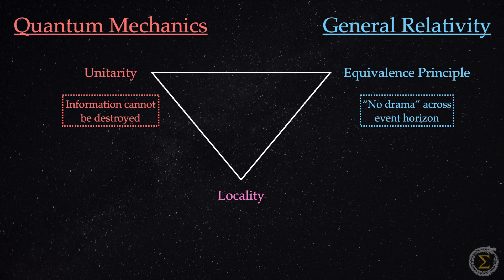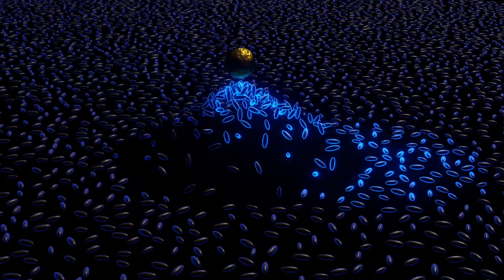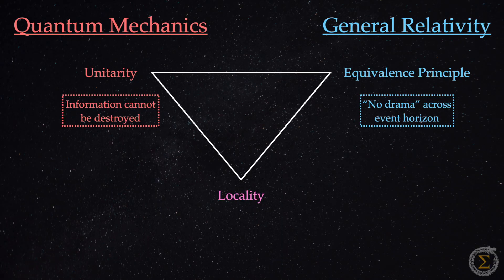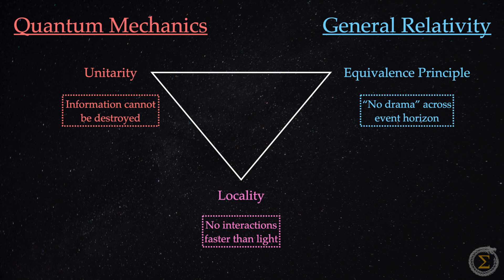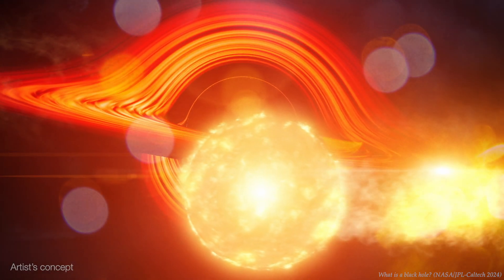Locality is a principle that underpins both quantum mechanics and general relativity. It states that events and interactions in one region of space cannot instantaneously affect distant regions. Information and effects can only travel at or below the speed of light. We really need to hold onto locality as both of them rely on it.